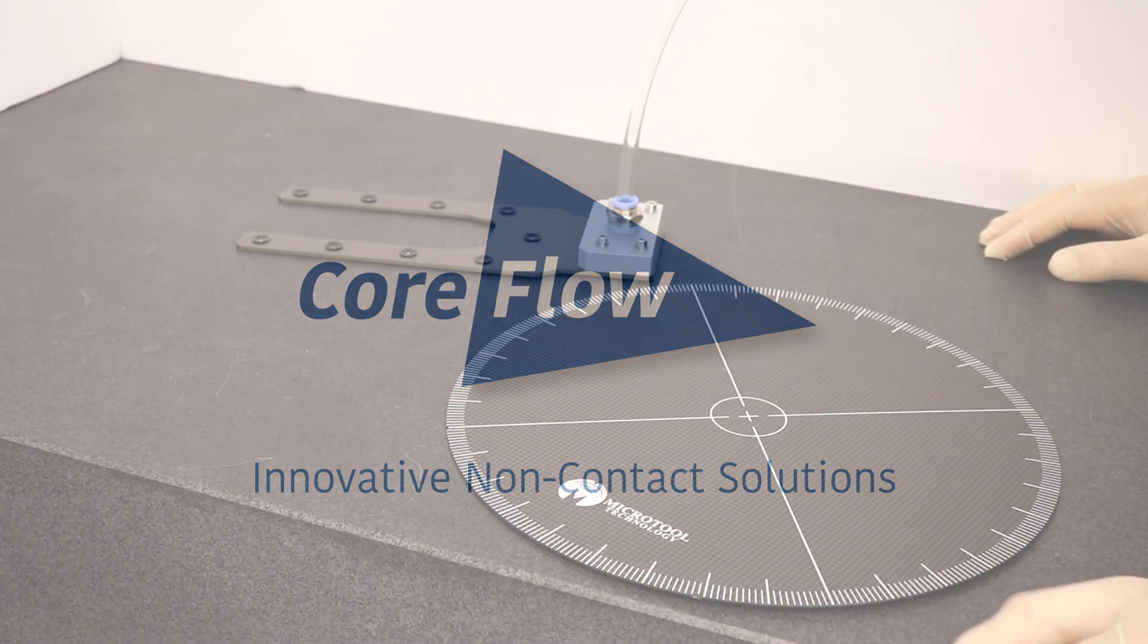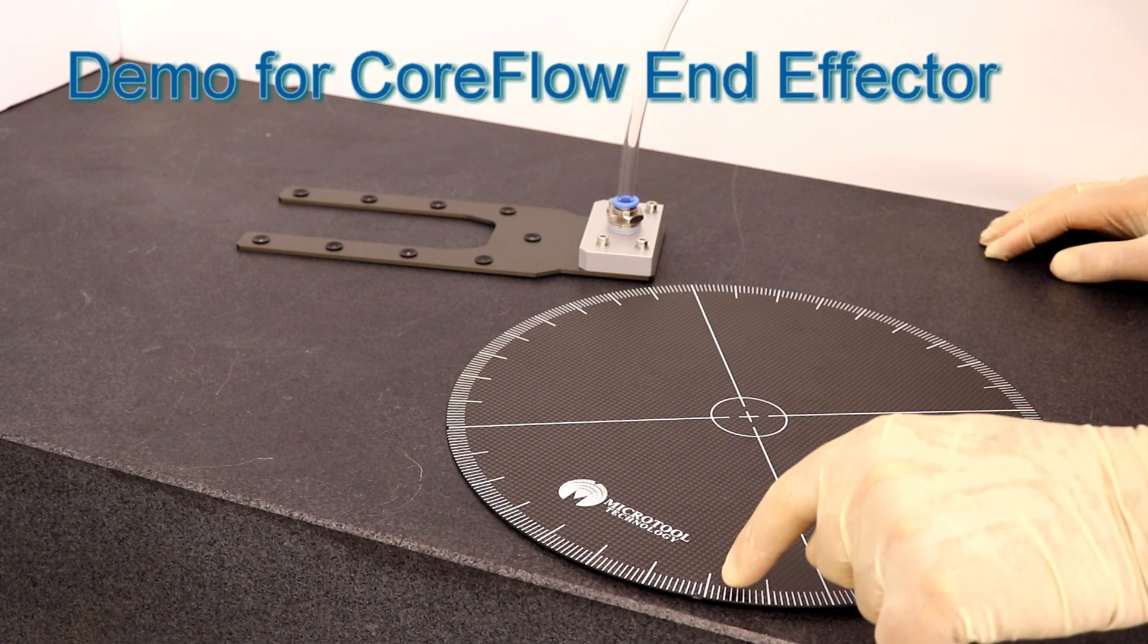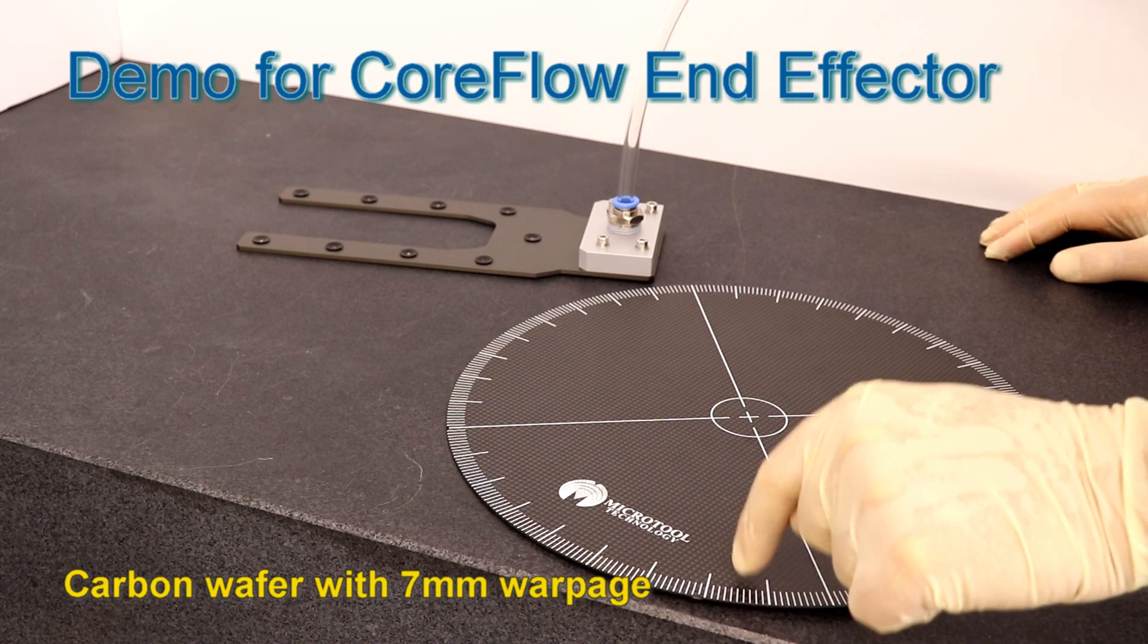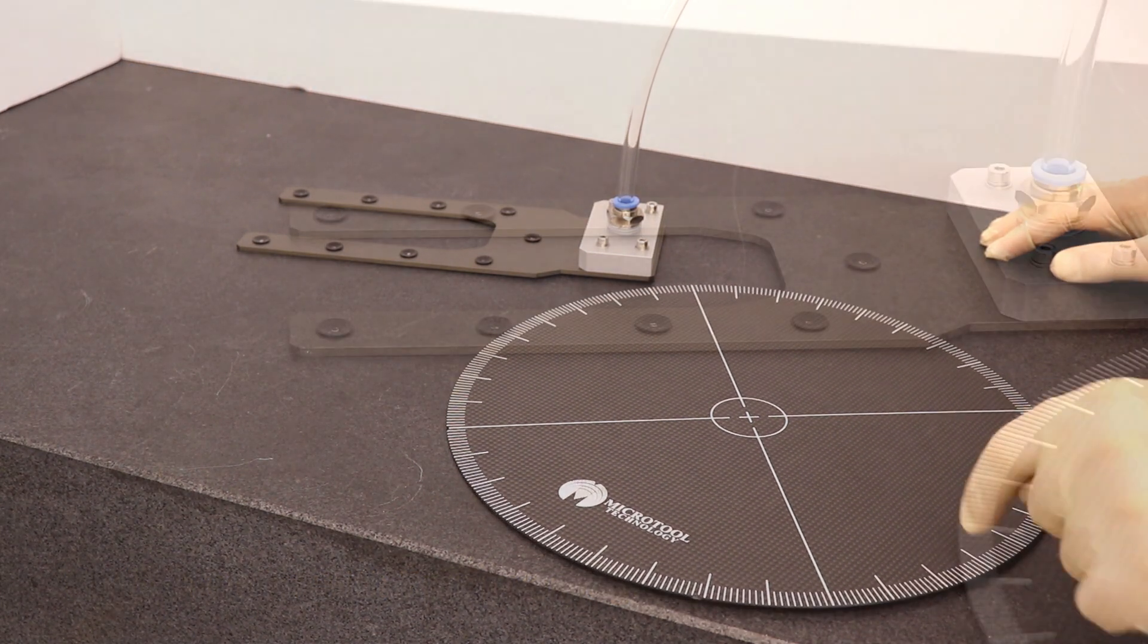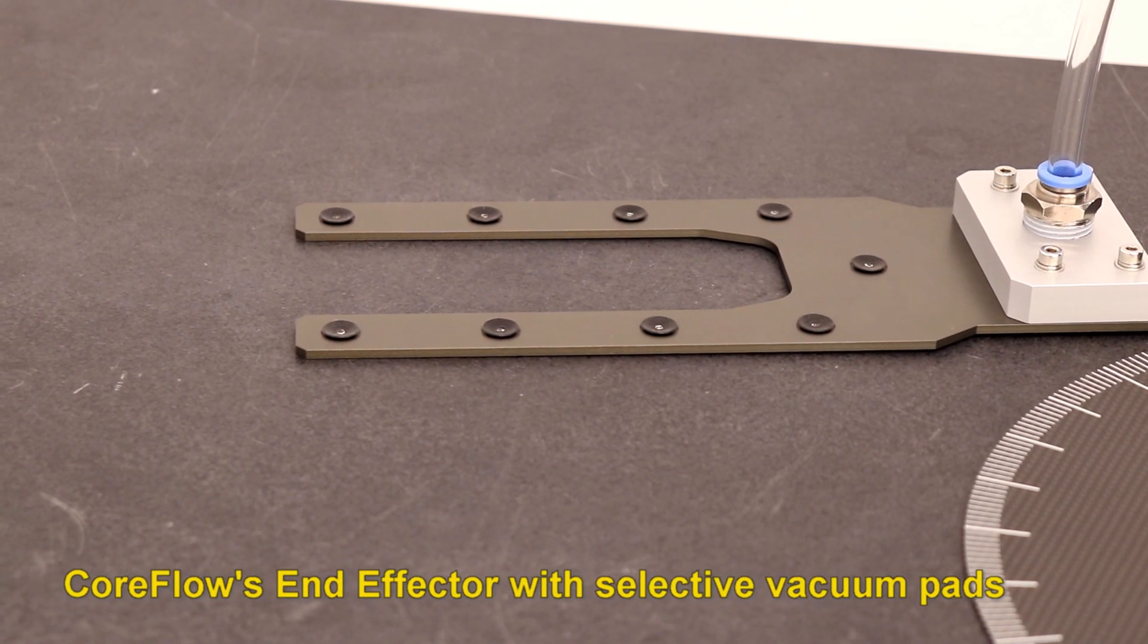CoreFlow end effectors use smart nozzle technology to handle wafers of any warpage. Here, we demonstrate a carbon wafer of 7mm warpage being handled by an end effector with selective vacuum pads.